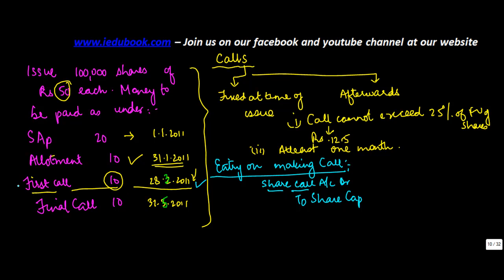Now, because this is the first call, every time whenever you make a call, you have to specify it in this entry. So the general entry is share call, but because this is the first call, you write this as share first call account debit to share capital. 10 rupees at the rate of 100,000 shares, so you debit 10 lakh and you credit 10 lakh. And the narration comes in as being first call due on 100,000 shares at the rate of 10 per share.